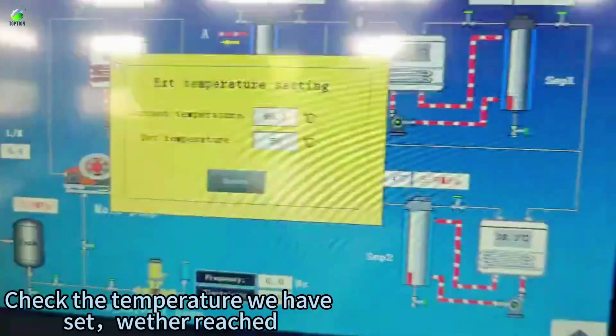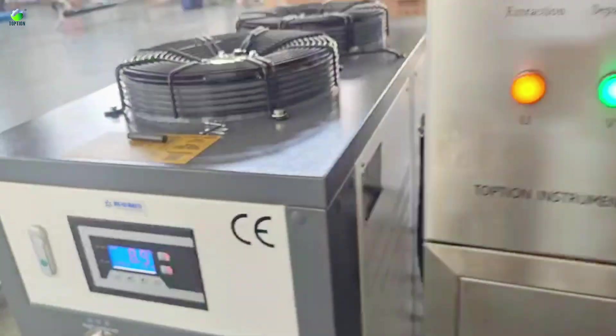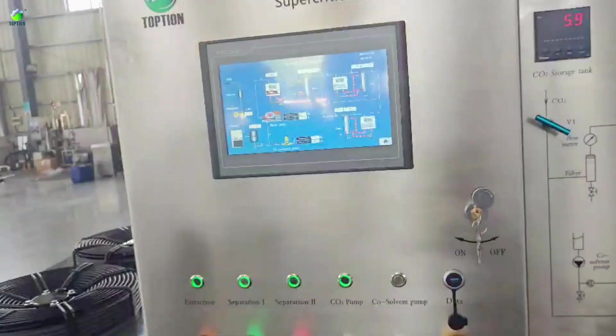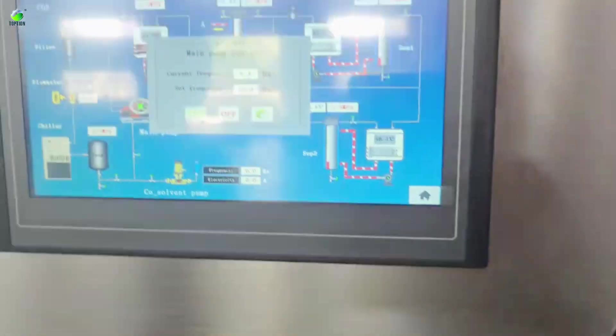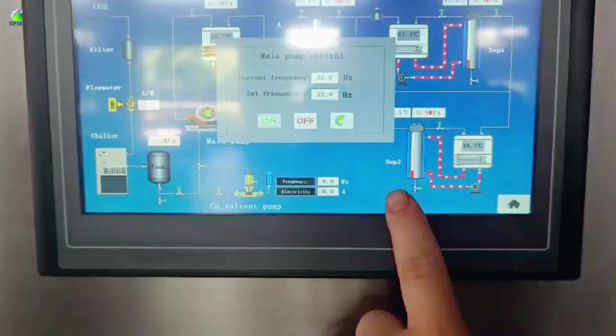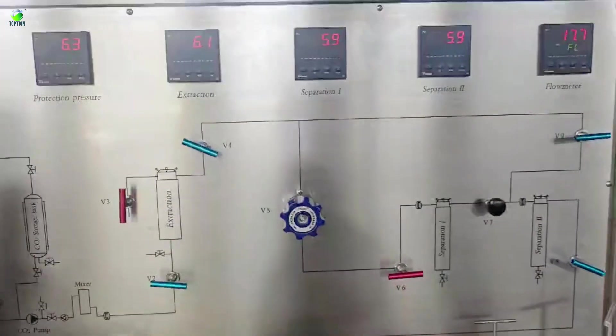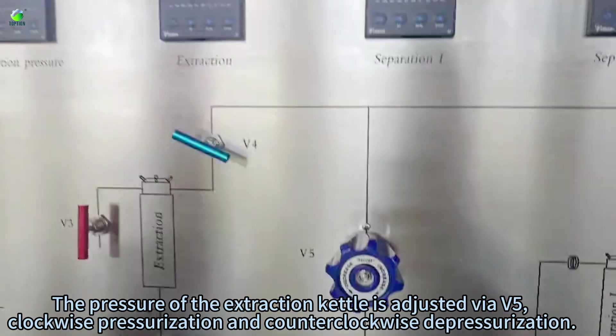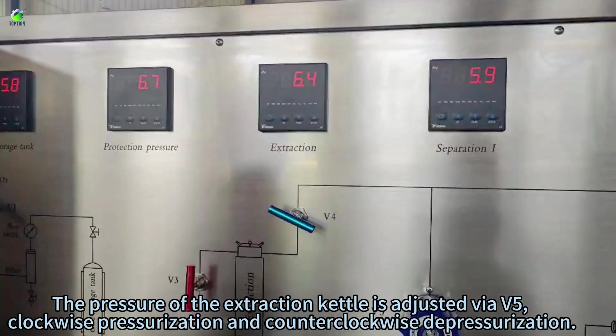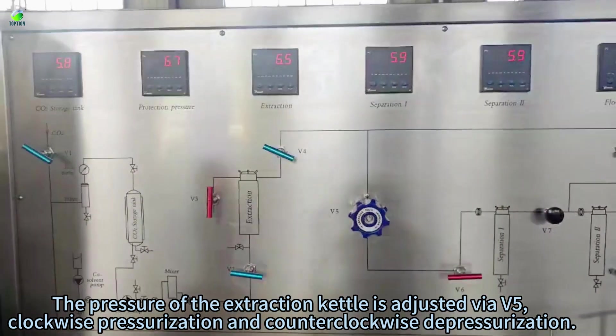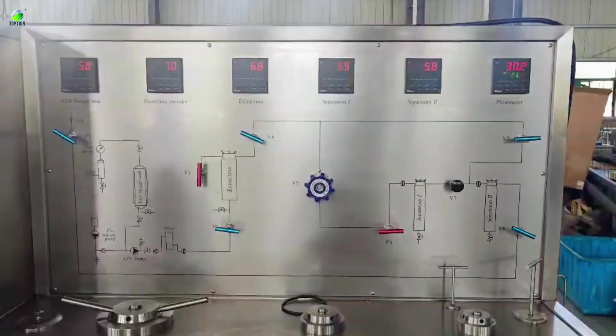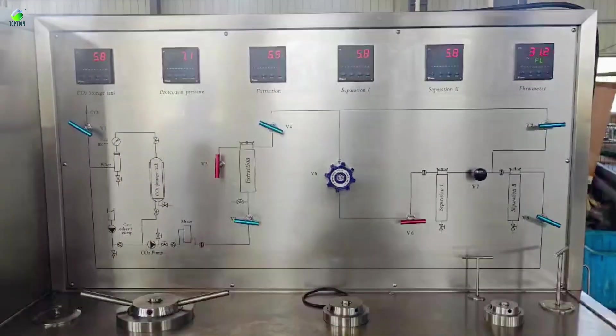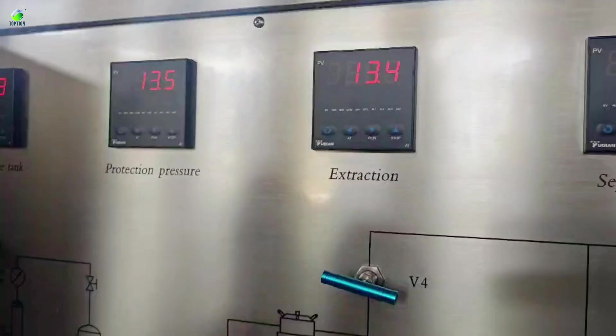Check the temperature we have set whether it reaches. After reaching the set temperature, start the main pump. The pressure of the extraction kettle is adjusted via VW: clockwise pressurization, counterclockwise depressurization. Pressure is rising.